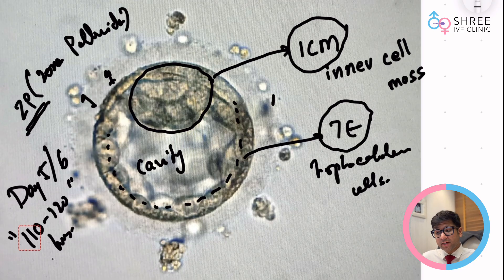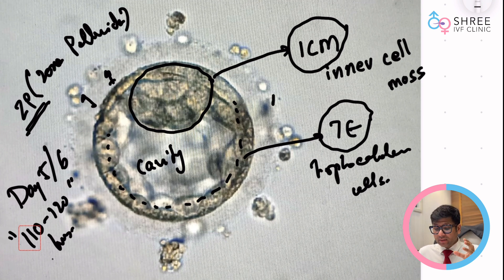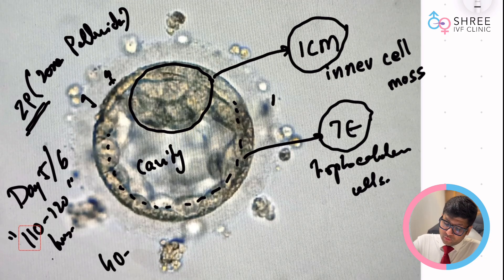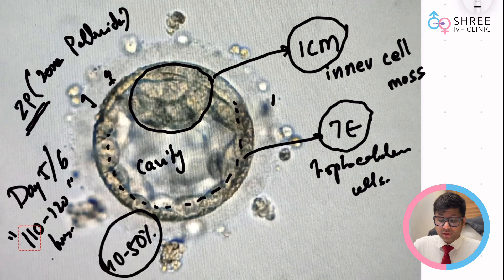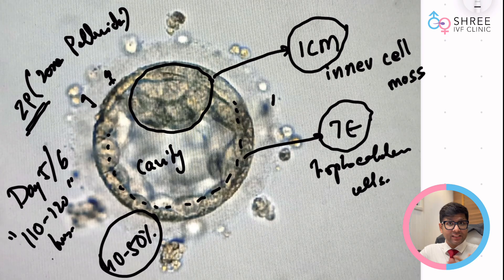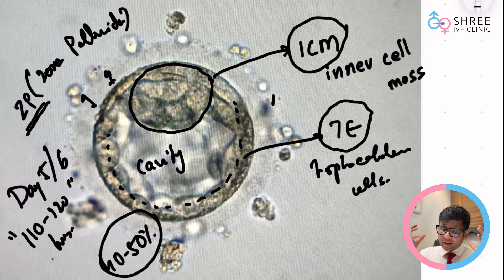Can you look at this embryo and say you're going to become pregnant immediately? The answer is no. With a good quality embryo like this, on average a patient can have around 40 to 50 percent implantation rate, but that's about it. It is also dependent on other factors like the uterus, the age of the patient, the protocol used, and hundreds of other things.